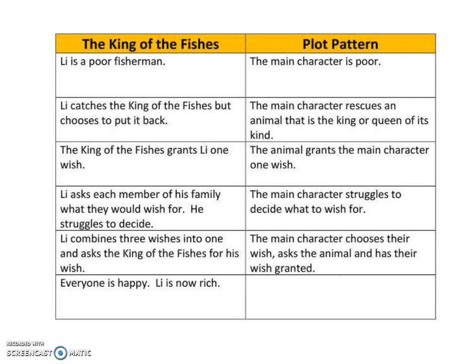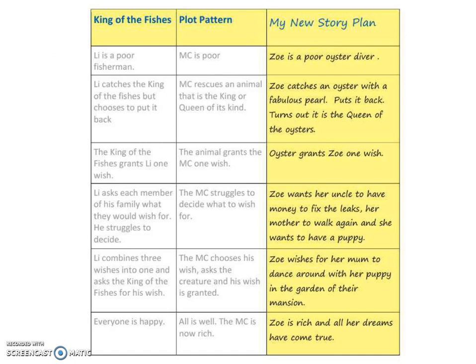This gets us to the ending, where everyone is happy and Lee is now rich. The plot pattern shows us that our wish tale needs to finish in a similar way, with all being well and the main character benefiting from that wish. Now here you can see a story plan — I've used the idea of King of Fishes, looked at those plot points and patterns, and planned my new story, hugging very closely to the model with very little changed.